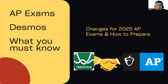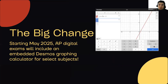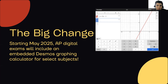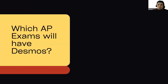The big change is about the Desmos graphing calculator. Here's a screenshot of the calculator — I got this directly from the AP Classroom website. You can see it's a fully functional Desmos calculator. The testing calculator may have some restrictions, but you can do everything you need to do with a regular calculator for the AP exam, except now you can do it on Desmos.